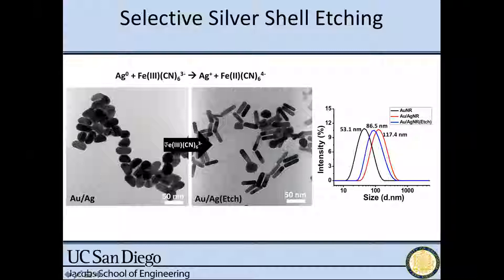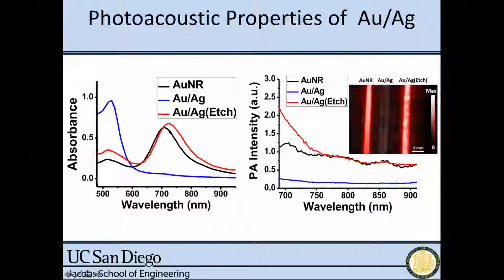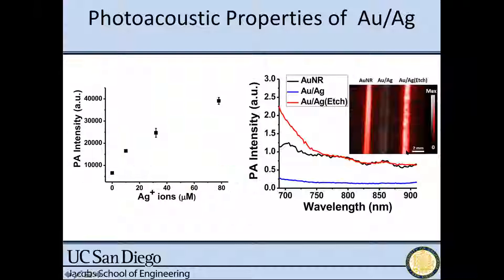These silver-coated gold nanorods: we add in the activator, release the silver, and the photoacoustic signal comes back. The absorption spectra show this clearly — red is before coating, blue is coated, red is after etching. The photoacoustic signal shows exactly what you would expect: the gold nanorods have signal, adding silver causes the signal to go away, and when etched, it returns. This is very important because we're showing that this photoacoustic signal correlates with the dose of silver — we're truly imaging the concentration of silver being released in this sample.